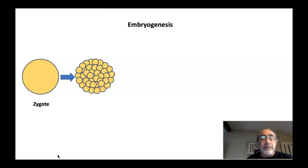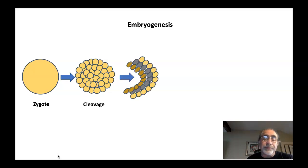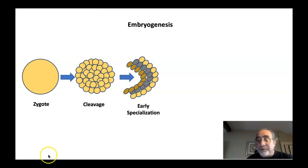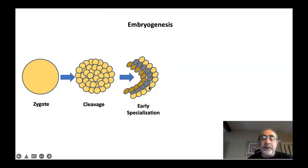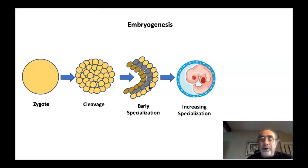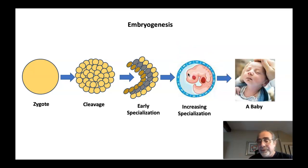Soon thereafter, within embryogenesis, that single cell splits, and those cells split, and those cells split, and so forth — into a process called cleavage. Where you had one cell, now we have many of the same type of cells. Then the cells begin to specialize. In early specialization, they begin to take shape, to become different from each other — further differentiated. Some cells are becoming heart cells, some are becoming central nervous cells, some are becoming skin cells and skeletal cells, etc. As this process moves forward, we have increasing specialization, where the parts begin to take shape into the various systems that make up the organism, until we get to the newborn baby.